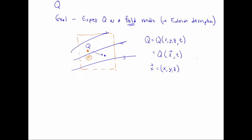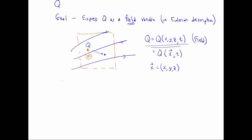Now the problem is, even though we want to express Q in this Eulerian or field format, the problem is that conservation laws for Q are typically in the Lagrangian description. In the Lagrangian system, or description, we are following a fluid particle.